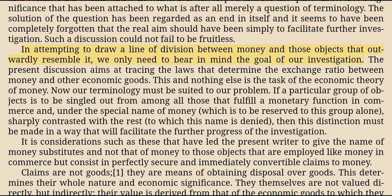In attempting to draw a line of division between money and those objects that outwardly resemble it, we only need to bear in mind the goal of our investigation. The present discussion aims at tracing the laws that determine the exchange ratio between money and other economic goods—this and nothing else is the task of the economic theory of money. If a particular group of objects is to be singled out from among all those that fulfill a monetary function in commerce and, under the special name of money, sharply contrasted with the rest, then this distinction must be made in a way that will facilitate the further progress of the investigation. It is considerations such as these that have led the present writer to give the name of money substitutes—and not that of money—to those objects that are employed like money in commerce but consist in perfectly secure and immediately convertible claims to money.